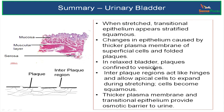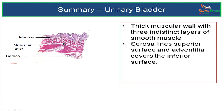In a relaxed bladder, the plaques are confined to the vesicles. Interplaque regions act as hinges that allow the apical cells to expand during stretching. When the bladder wall is stretched, the cells become squamous. The thicker plasma membrane and transitional epithelium provide an osmotic barrier to urine — hence this epithelium is called waterproof epithelium. Outer to the mucosa is the thick muscular coat called the detrusor muscle, which has three indistinct layers of smooth muscle.